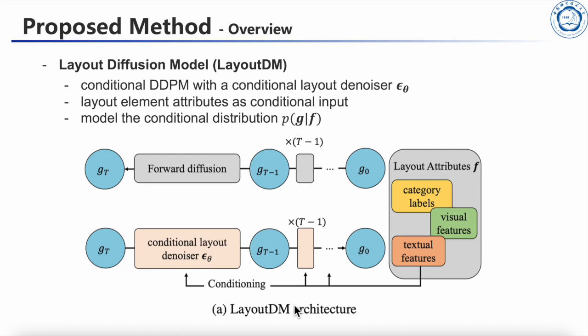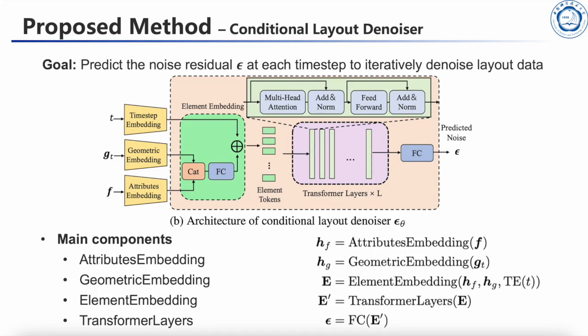We present C-layout denoiser, a conditional layout noise predictor based on the transformer. The inputs to C-layout denoiser are noisy layout geometric parameters GT, layout attributes F, and time step T. The goal is to predict the noise residue epsilon at each time step to iteratively denoise layout data.